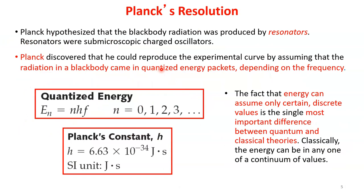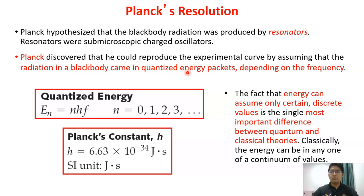Planck hypothesized that black body radiation was produced by resonators — sub-microscopic charged oscillators. Planck discovered he could reproduce the experimental curve by assuming that the radiation in a black body came in quantized energy packets depending on the frequency. The fact that energy can assume only certain discrete values is the single most important difference between quantum and classical theories.